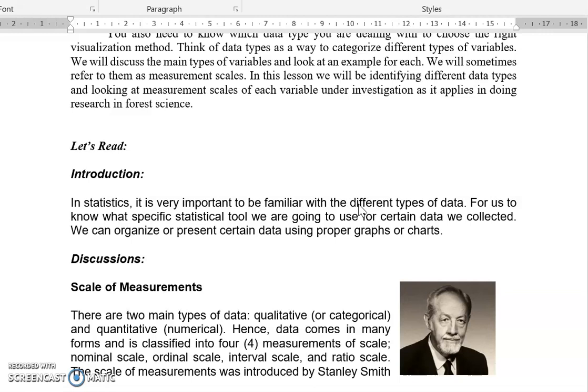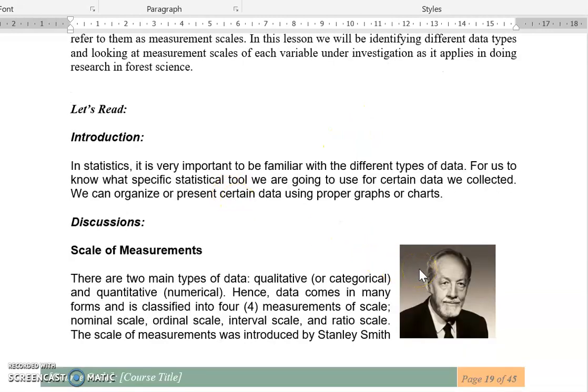One of the simplest forms of statistical analysis that we can use, we have descriptive stat and we have inferential statistics. Now, in descriptive statistics, you are merely describing certain things or in data types, like you make graphs, you describe what is the color, you describe what is the age brackets, describe what is the gender, or those are the nominal, the ordinal scales, which later we will be discussing. Now, there are two main types of data, the qualitative or categorical. There are only two main types of data, qualitative or categorical, and quantitative or numerical. Quanti means number, quali means categories or descriptions. Hence, data comes in many forms and is classified into four measurements of scale, nominal scale, ordinal scale, those are for qualitative, and then we have the interval scale and the ratio scale for the quantitative.